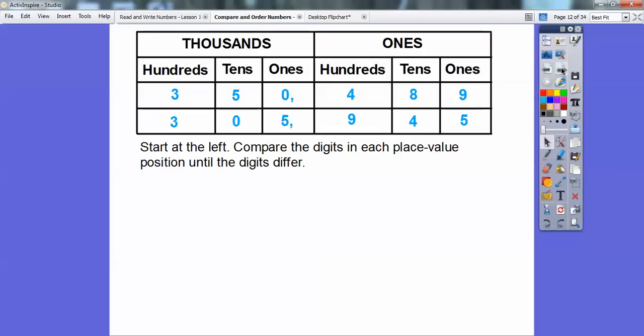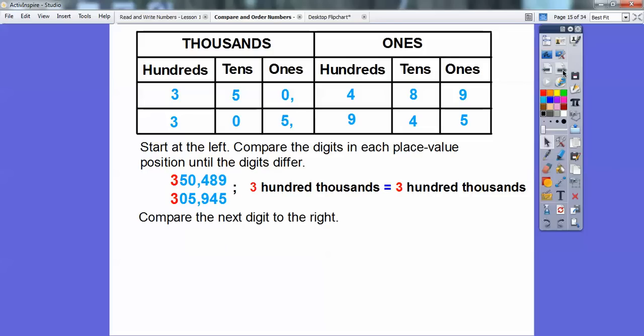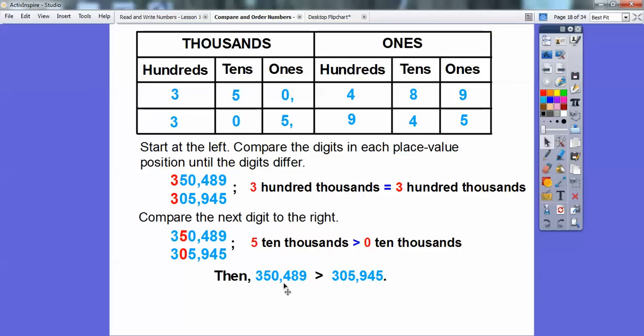Start at the left and compare the digits in each place value position until the digits differ. Look at these digits right here - they're the same. This is 300,000, this is 300,000, so 300,000 equals 300,000. Move one digit to the right. This is 50,000 and this is zero ten-thousands, so five ten-thousands is greater than zero ten-thousands. Since it's greater right there, then I can conclude that 350,489 is greater than 305,945.